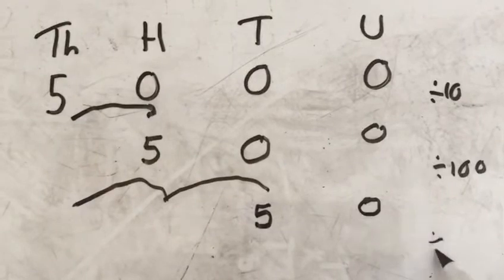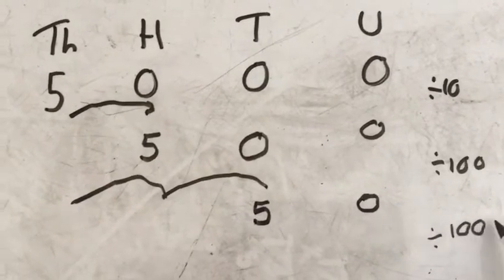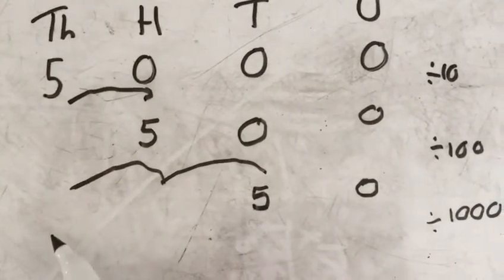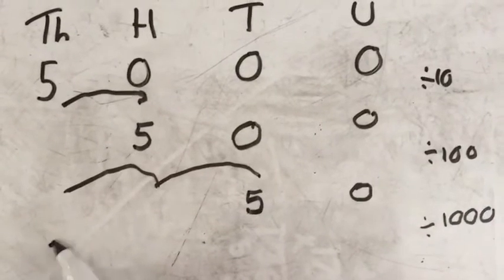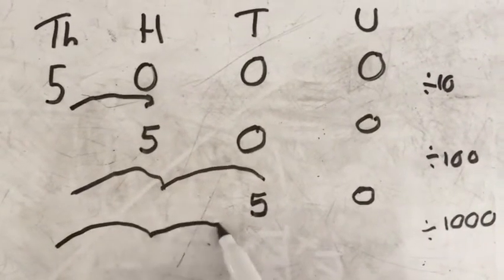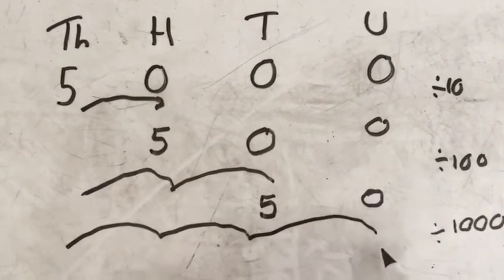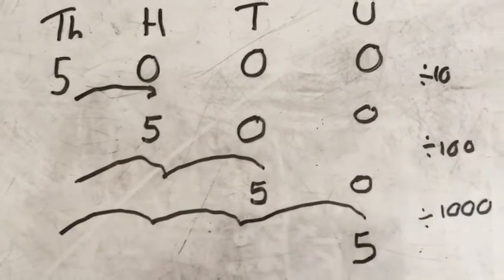If it's dividing by a thousand, it is going to be three steps to the right hand side. So our 5 starts up in our thousands, goes into our hundreds, then into our tens, and then into our units to give you 5.